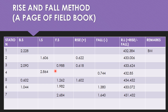Before the summation, let us identify the turning points. A turning point is where both backsight and foresight are observed. Station 3 is turning point 1, station 5 is turning point 2, and station 6 is turning point 3. The summation of all backsights is 5.964, and the summation of all foresights is 6.916.